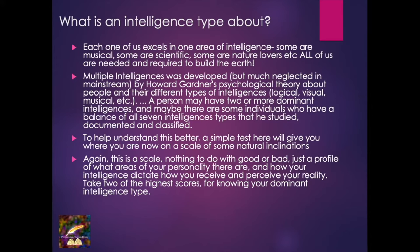It was developed by Howard Gardner, a Canadian educational psychologist. He developed a theory about people and their different types of intelligences — logical, visual, musical, etc. A person may have two or more dominant types of intelligences, and maybe some individuals have a balance of all seven types. To help understand this better, a simple test on my Excel sheet will help you determine what is your child's — or your own — intelligence type. It's just a profile, nothing to do with good or bad.